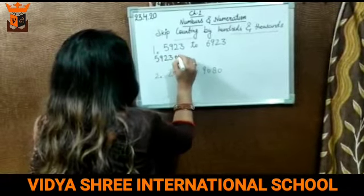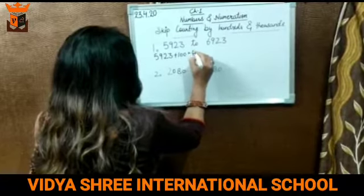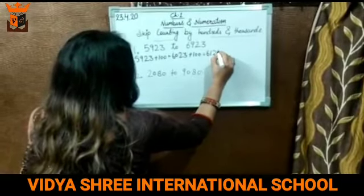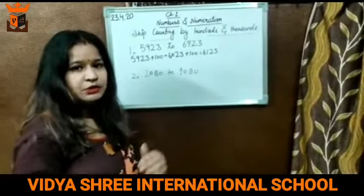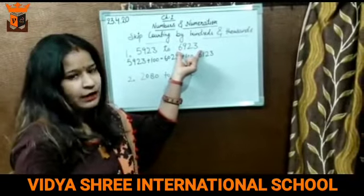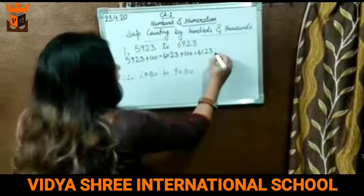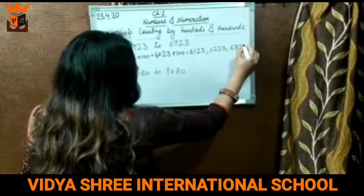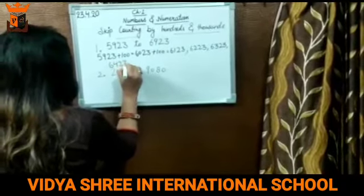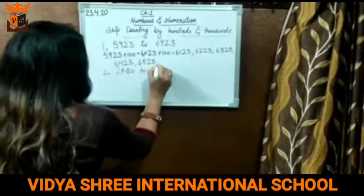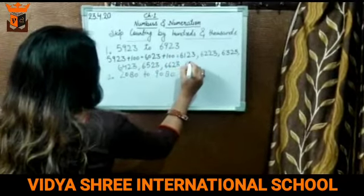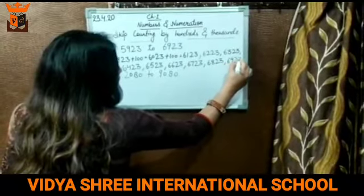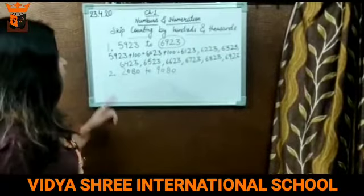5923 plus 100 will give us 6023. Again add 100, we get 6123. We just continue this process: 6223, 6323, 6423, 6523, 6623, 6723, 6823, until we get 6923 as our result, because that is what the question is asking for.